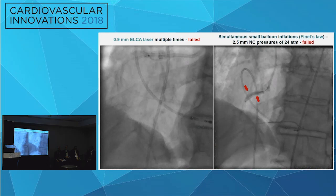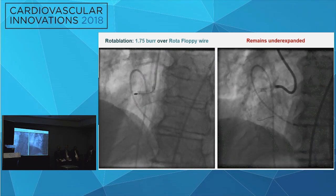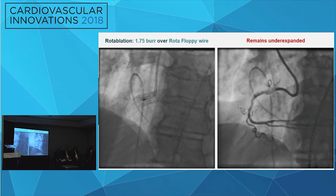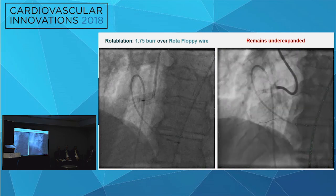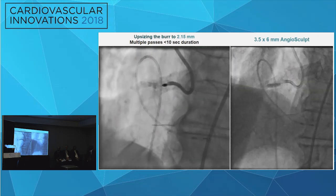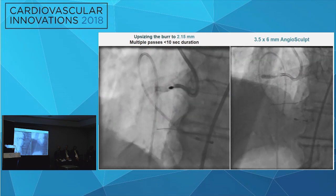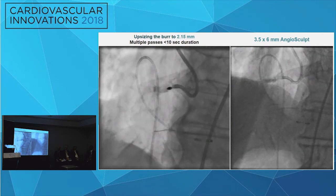We moved back to the laser technique, but kept failing. We then decided to use simultaneous balloon inflations with 2.5 millimeter NC balloons at 24 atmospheres pressure, but had the same result. Our next technique was rotablation with a 1.75 burr over a rotafloppy wire, exchanged using a micro catheter. We still saw some under-expansion, so we upsized the burr to 2.15 millimeters and used multiple passes; however, each pass lasted less than 10 seconds because the patient was complaining of chest pain.